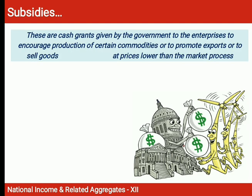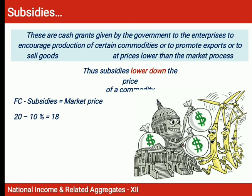What is the meaning of subsidies? Subsidies are cash grants by the government to enterprises to encourage production of certain commodities, promote exports, or to sell goods at a price lower than the market price. Subsidies lower the price of the commodity. For example, if factor cost is Rs. 20 and the government grants a subsidy of 10%, the market price becomes Rs. 18. This means subsidies reduce the market price of the commodity.